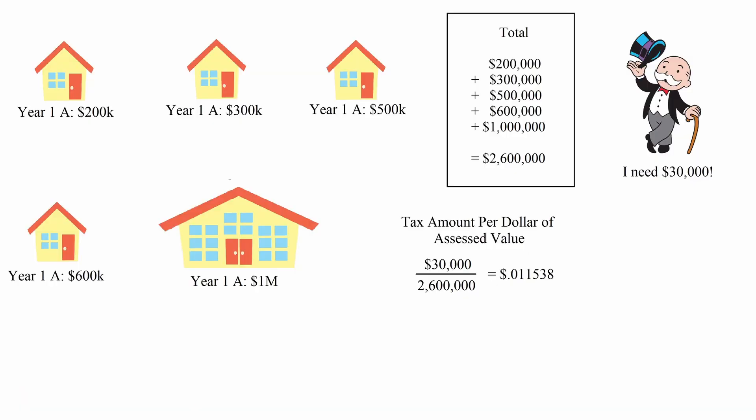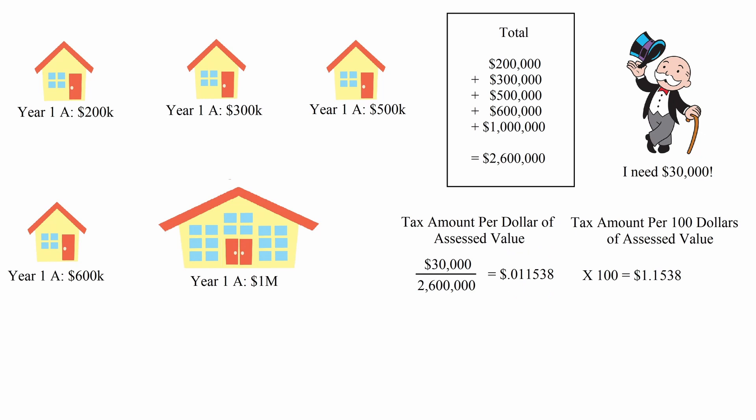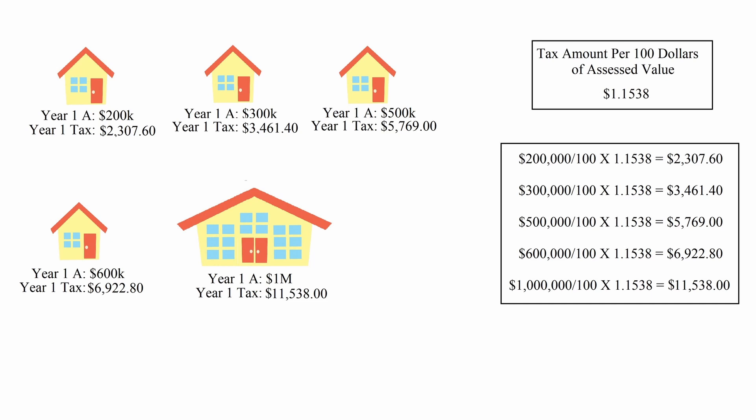What this means is that for every dollar of assessed value, the property tax would be just over a penny. And because 0.011538 is a bit ungainly, it's multiplied by 100 to be 1.1538, so that the new interpretation is the amount of property tax per $100 of assessed value. This is how the tax rate is measured in the HRM. Doing the math, this is what the town's residents' tax bills would be. As you can see, everything is proportional. The person with the $600,000 home pays three times as much as the person with the $200,000 home, and the person in the $1 million home pays five times as much as the person in the $200,000 home.